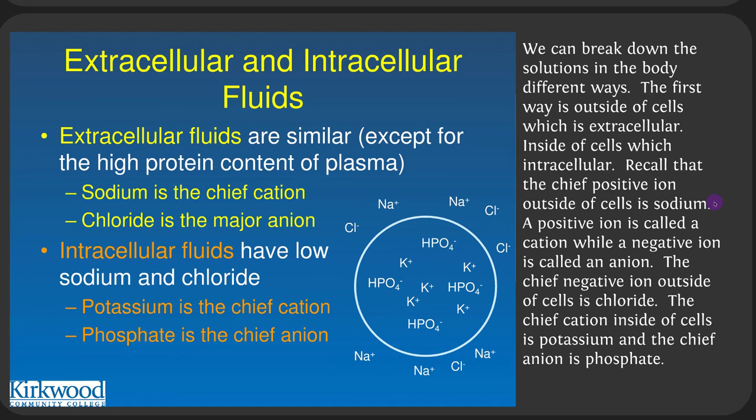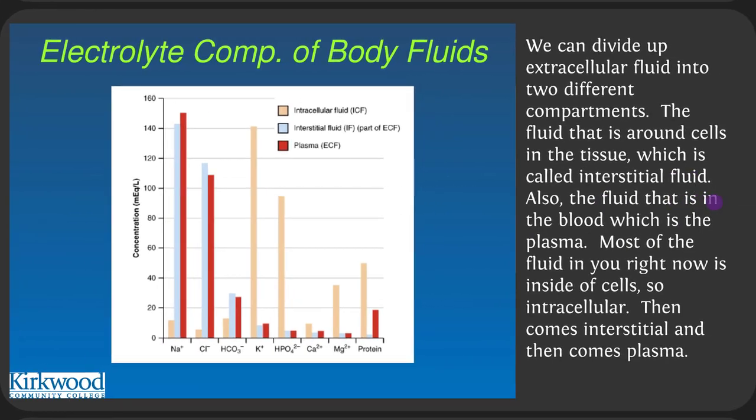The first way is outside of cells versus inside of cells — extracellular versus intracellular. The chief positive ion outside of cells is sodium, which is pumped out with the sodium-potassium pump. A positive ion is called a cation; a negative ion is called an anion. The chief negative ion outside of cells is chloride. The chief cation inside cells is potassium and the chief anion inside cells is phosphate. We can divide extracellular fluid into interstitial fluid — the fluid around cells in tissue — and plasma, the fluid in blood.